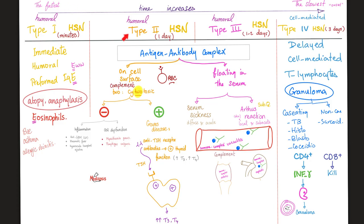Here is a quick overview. Type 1 is immediate — within minutes. Humoral immunity, antibodies such as IgE. Remember, IgE is EW: allergy, anaphylaxis, atopy, asthma, eosinophilia — EW. Bee sting — EW. IgE is preformed and ready.